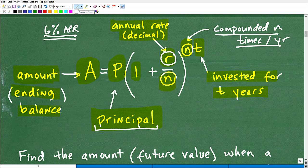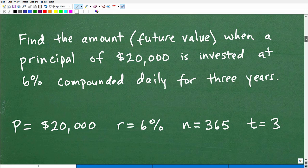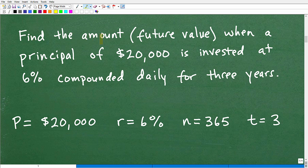Let's go ahead and actually apply this formula by doing this example problem. Here is our example. It says find the amount, the future value, the ending balance, the future value over a certain period of time elapsing. When a principal of $20,000, our starting amount.